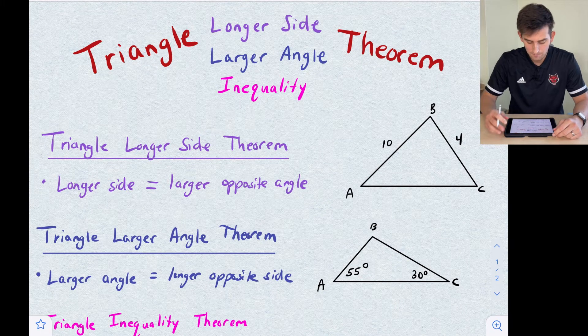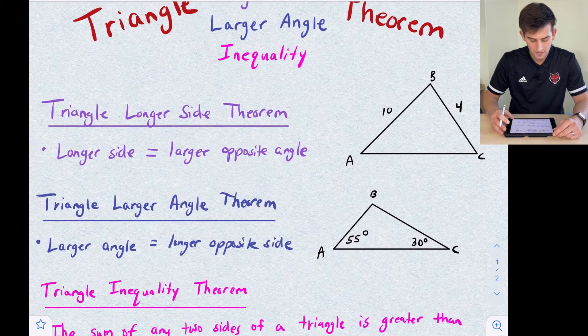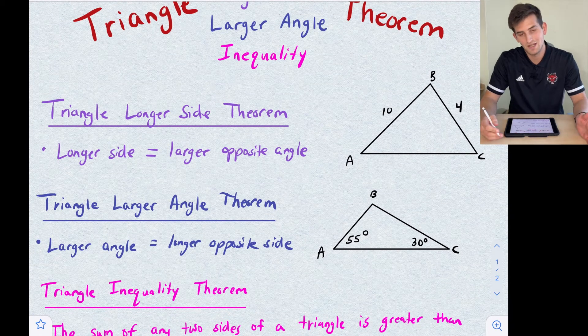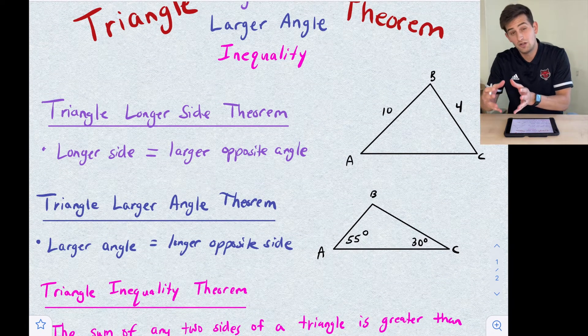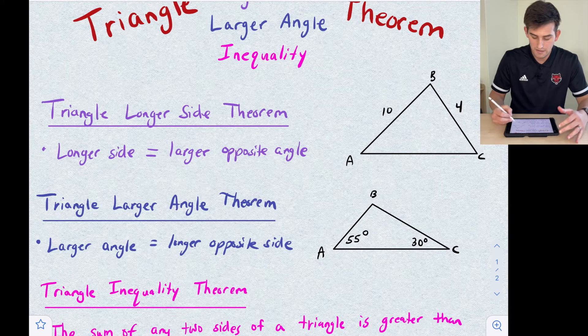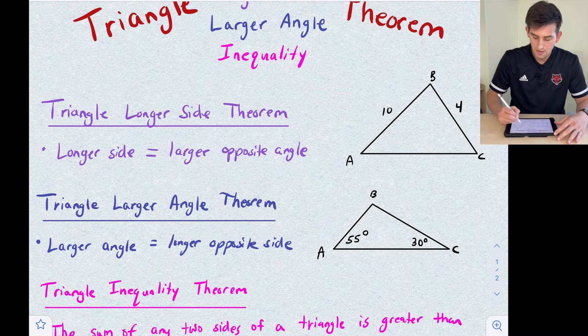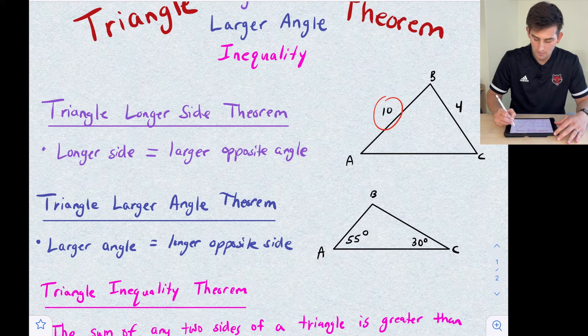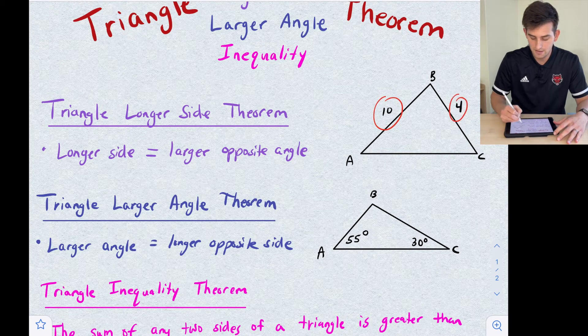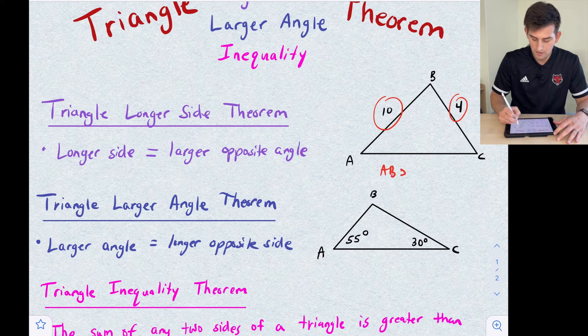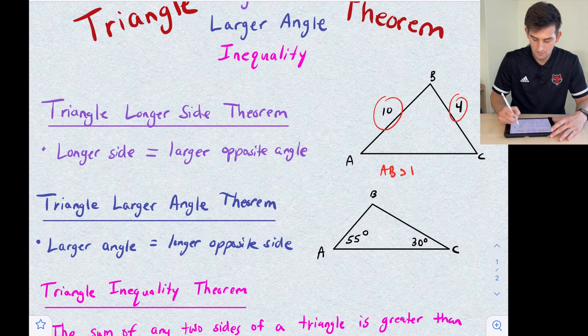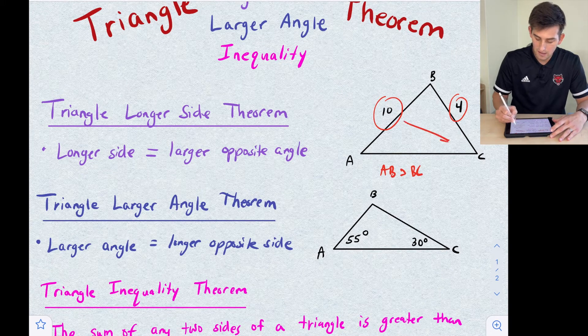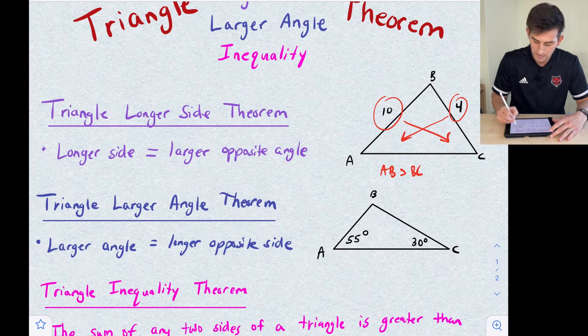The Triangle Longer Side Theorem basically means the longer the side, the larger the opposite angle. If we look at our diagram triangle ABC, we see that side AB is 10 and side BC is 4. Since AB is greater than BC, then the angles that are opposite will also have the same relationship. So the measure of angle C will be greater than the measure of angle A.